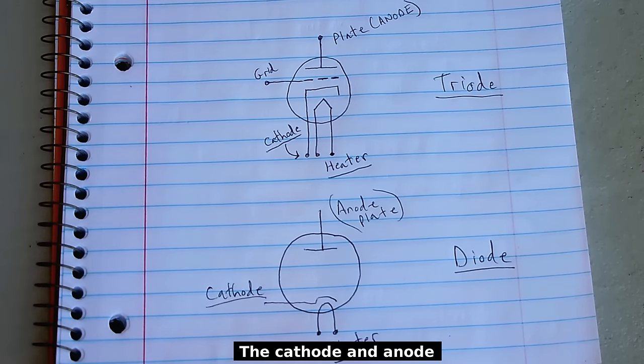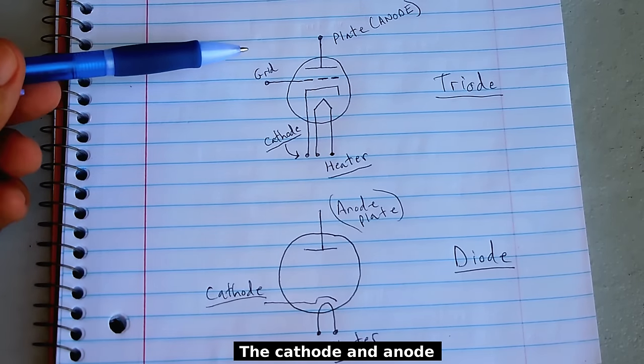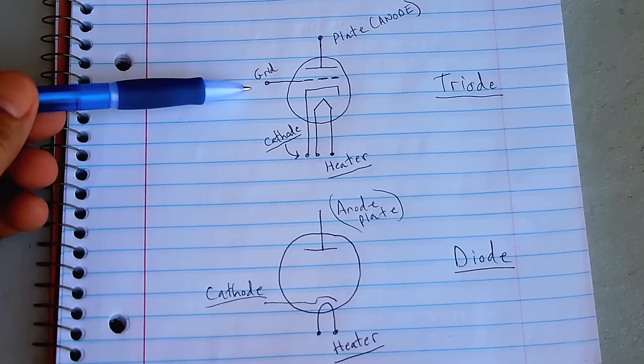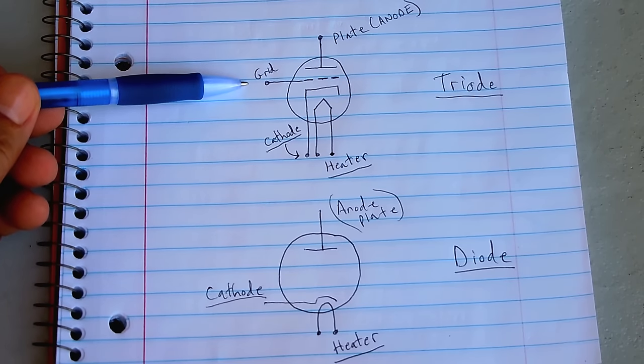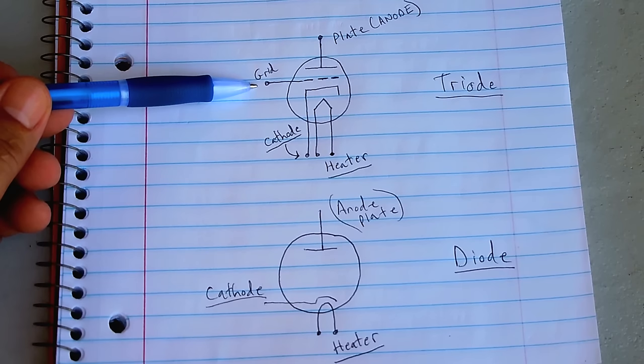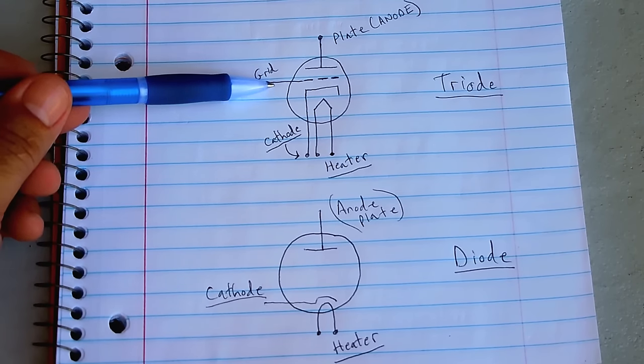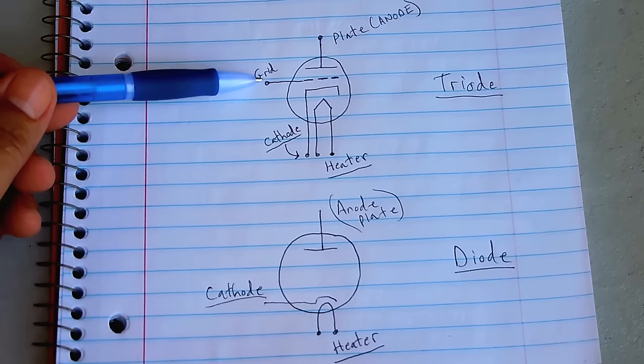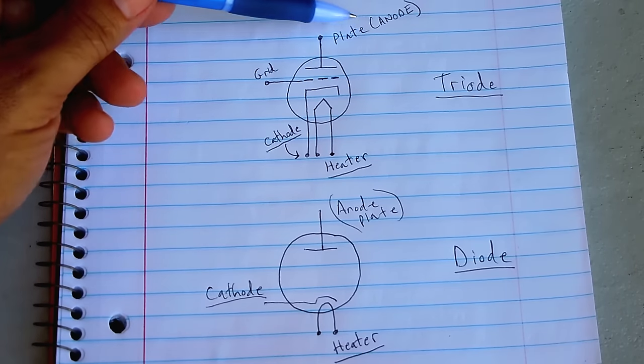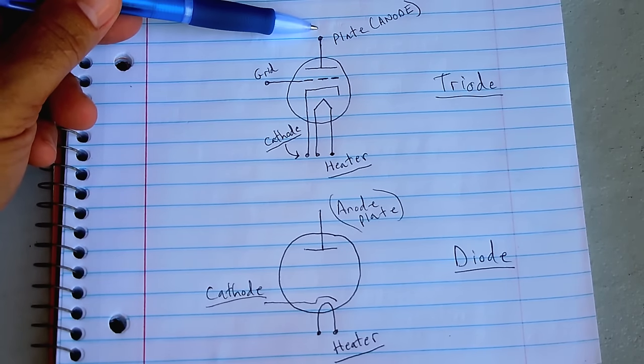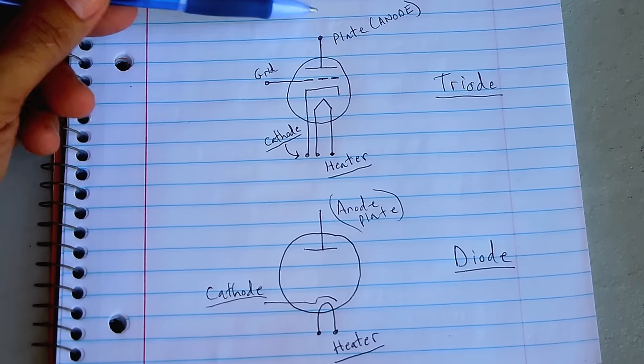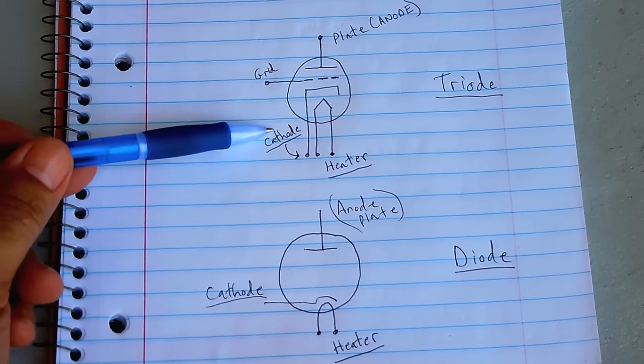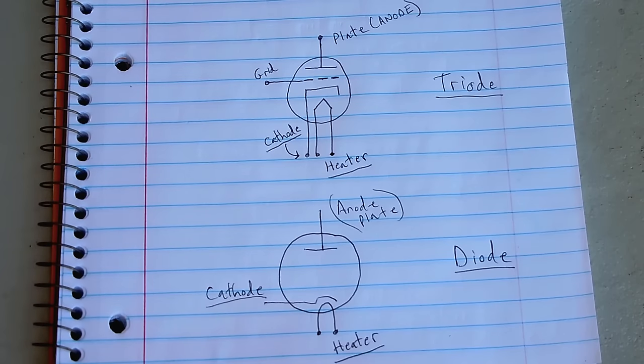The grid is what controls how much flows between the two plates. The best way to compare this to a modern day transistor, the grid would be the base of the transistor, where you would input a signal that you want amplified, or if you wanted to use a transistor as a switch, the grid would be the base. The anode, or the plate, would be known as the collector of the transistor. And the cathode, or the negative part, is the emitter of the transistor.